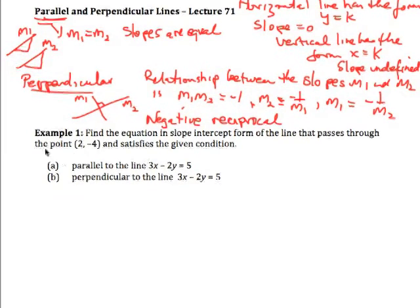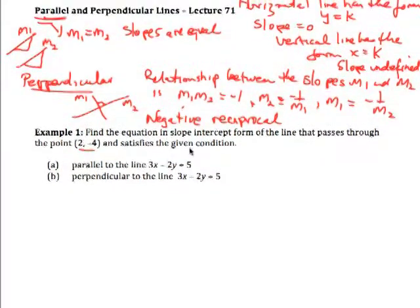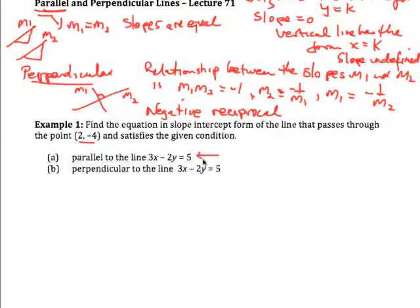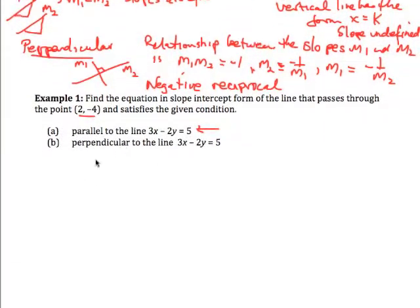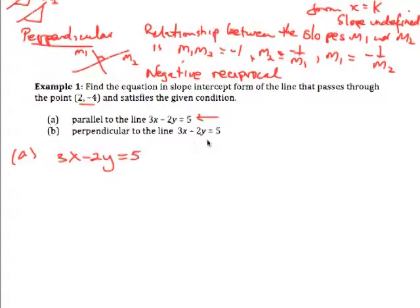Now in this particular example we are asked to find the equation in slope-intercept form of a line that passes through the point and satisfies the given condition, number 1 that is parallel to this line. So if I look at this line, if it's parallel to this line then it has the same slope. So the first thing I have to do is find the slope.